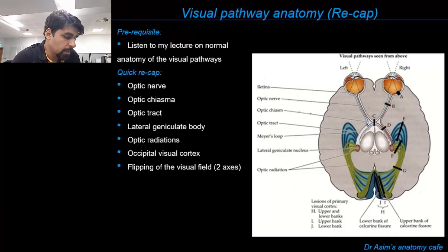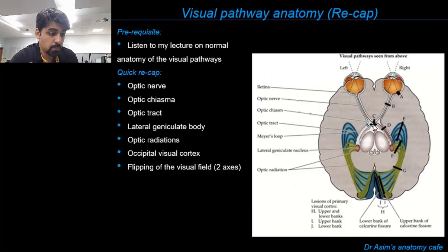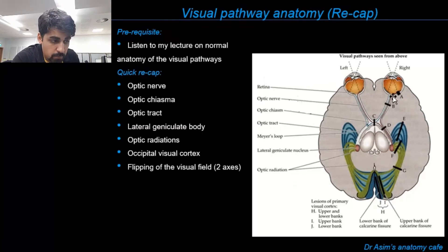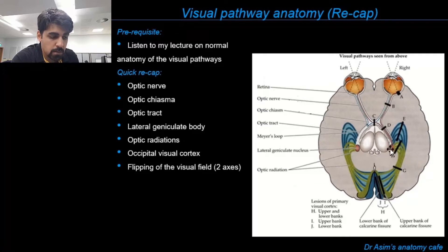Just to give you a quick recap: in our previous lecture on the normal anatomy of the visual pathways, we discussed that the optic nerves project outwards and backwards from the back of the eye. These two optic nerves cross over in a region known as the optic chiasma. Only the nasal fibers cross over here, while the temporal fibers do not cross. The optic chiasma then continues backwards as the optic tract, which contains the temporal fibers from the ipsilateral side and the nasal fibers from the contralateral side. The optic tract then relays visual information into the lateral geniculate body, one of the nuclei inside the thalamus.